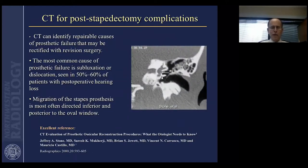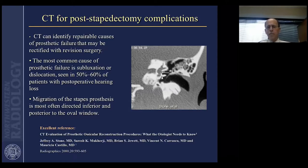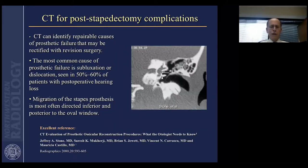There's an excellent reference article by Jeff Stone, Suresh Mukherjee, Mauricio Castillo, and others — from Radiographics in 2000 — discussing what you need to comment on and what the otologist needs to know in evaluating prosthetic ossicular reconstruction procedures. From their article, a coronal plane image shows a bony prosthesis that has been dislocated and angulated inferiorly, now overlying the cochlear promontory rather than its proper location. Most ossicular prosthetic dislocations occur in this fashion — with inferior dislocation.